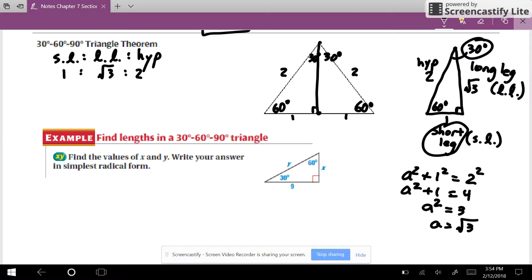Okay, let's go ahead and try to solve this triangle down here. Here's my 30. 30 is opposite of the short leg, so short leg is x, and then 9 is opposite of 60. That's my long leg. And y is my hypotenuse.